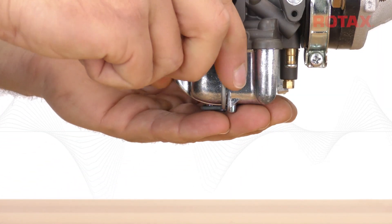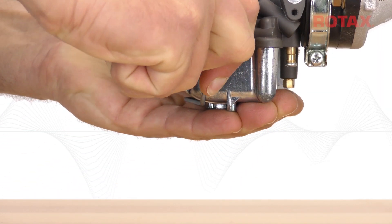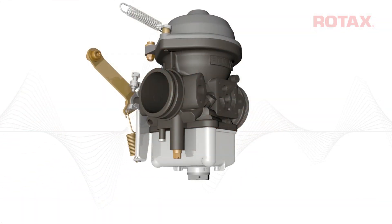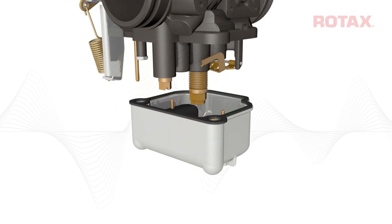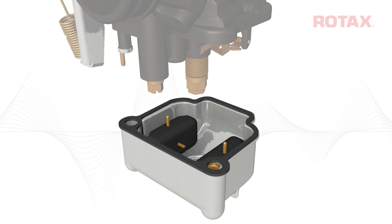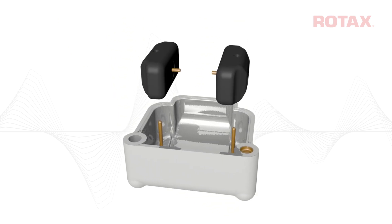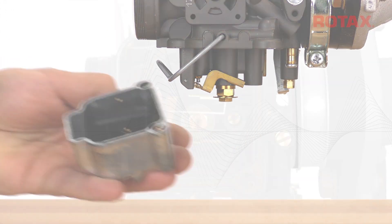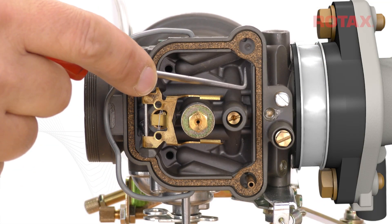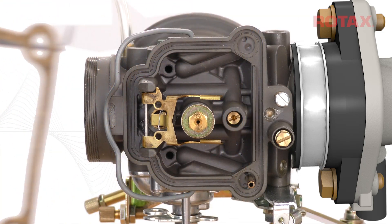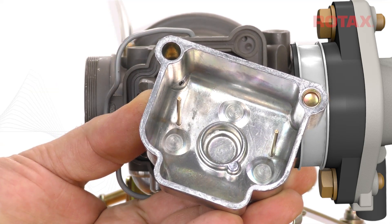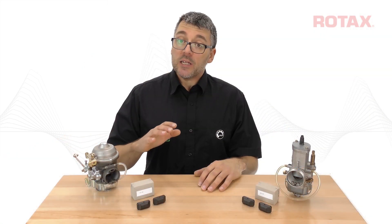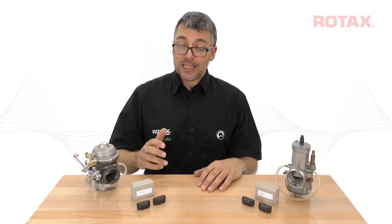Open the float bowl clip. For 914 series carburetors, cut the safety wire and remove the float bowl attachment screw and o-ring. Remove the float bowl chamber along with the floats and the float bowl gasket. Inspect the float bowl for any contamination. If any contamination is found, the entire fuel system must be inspected and cleaned.